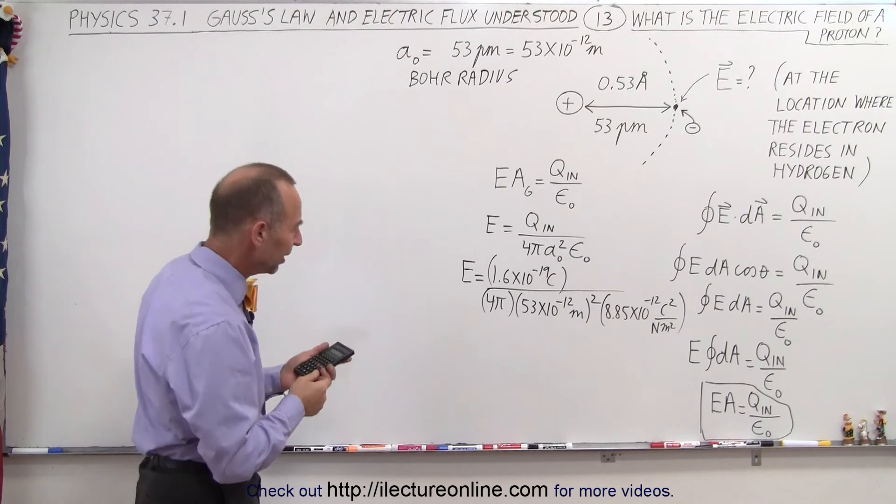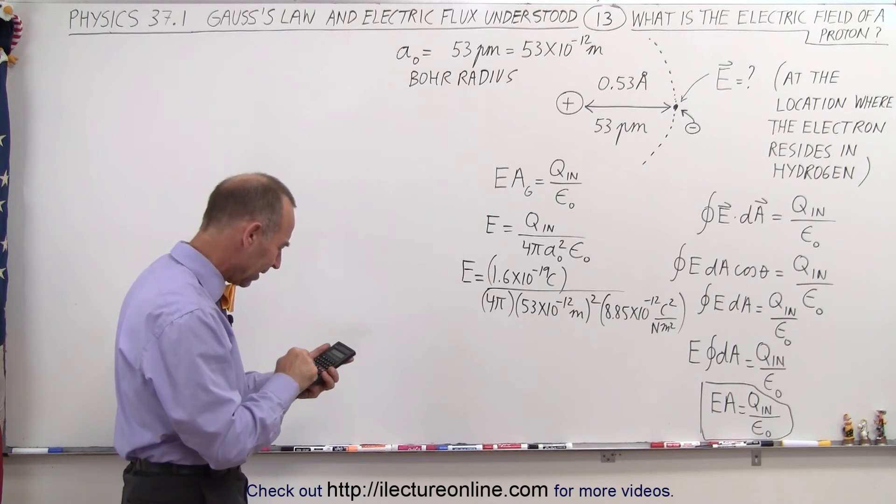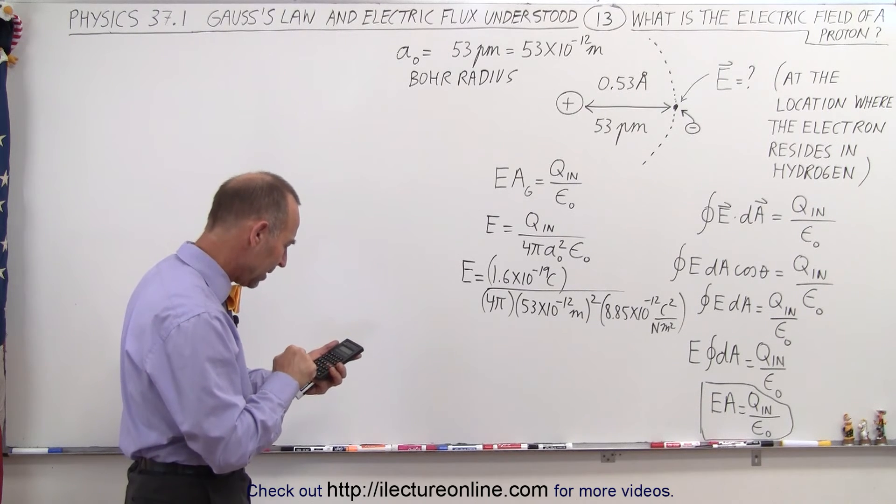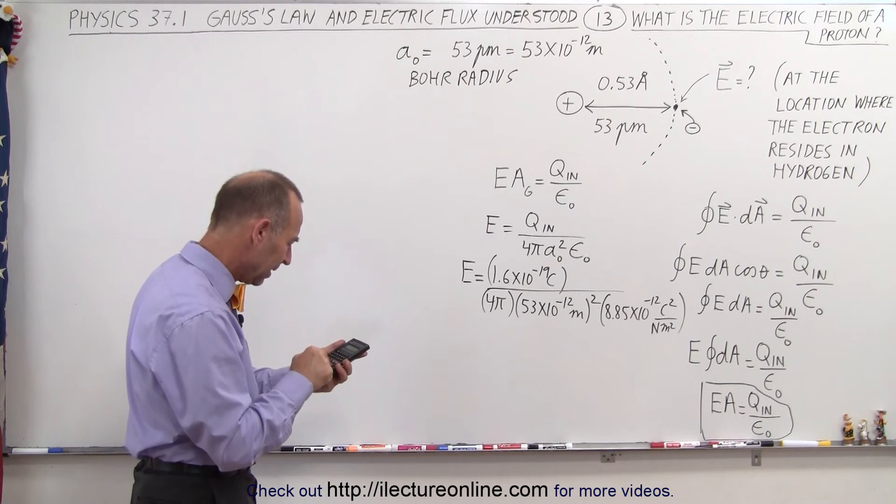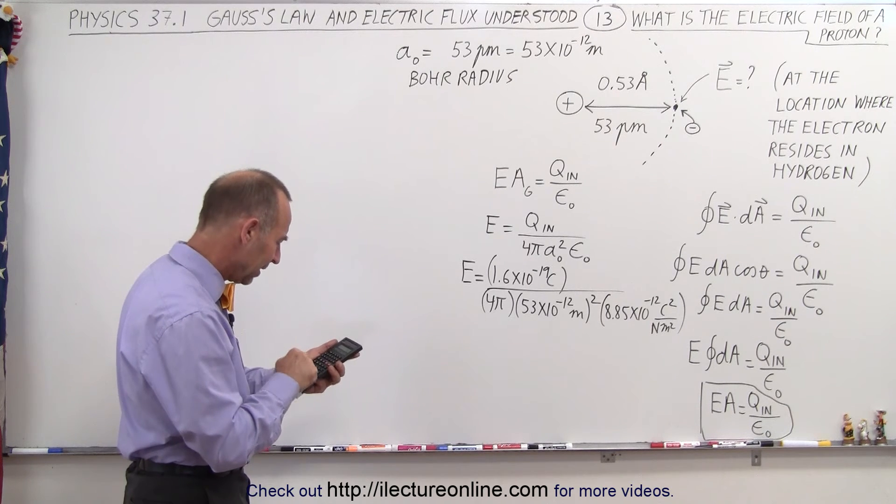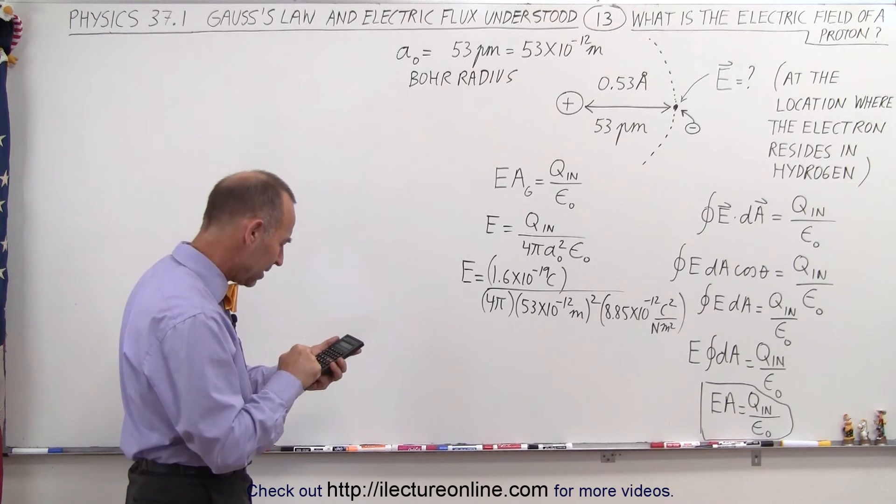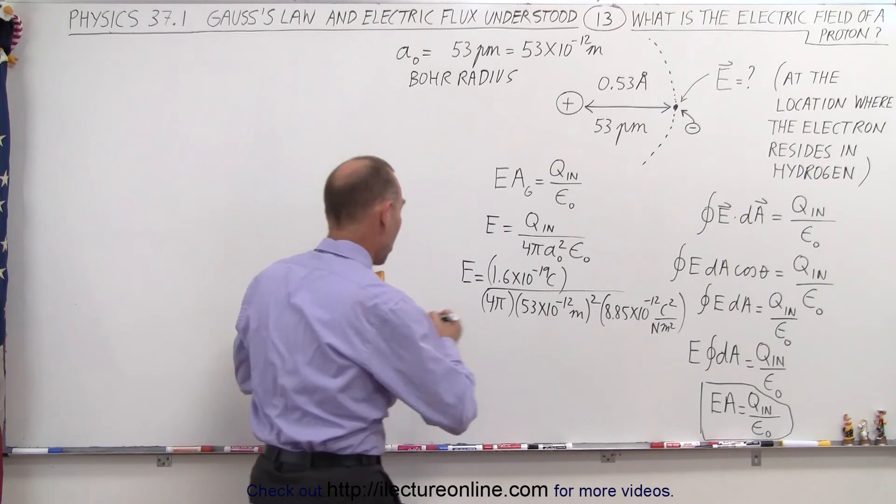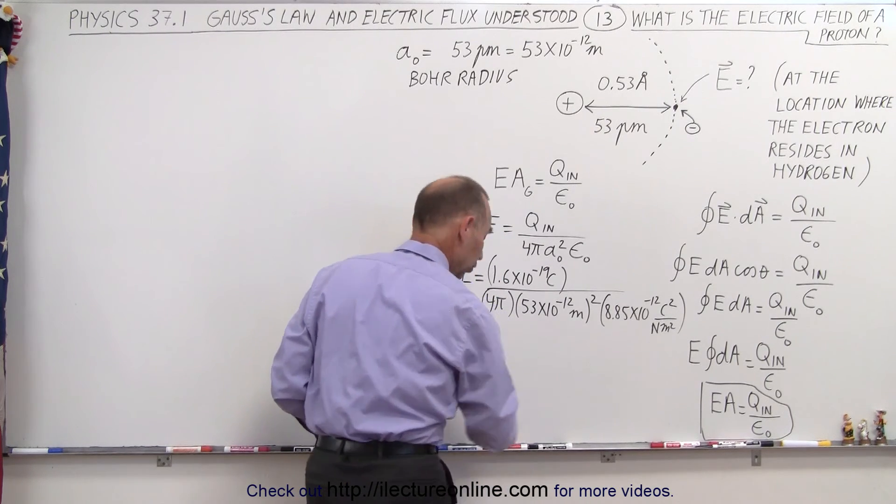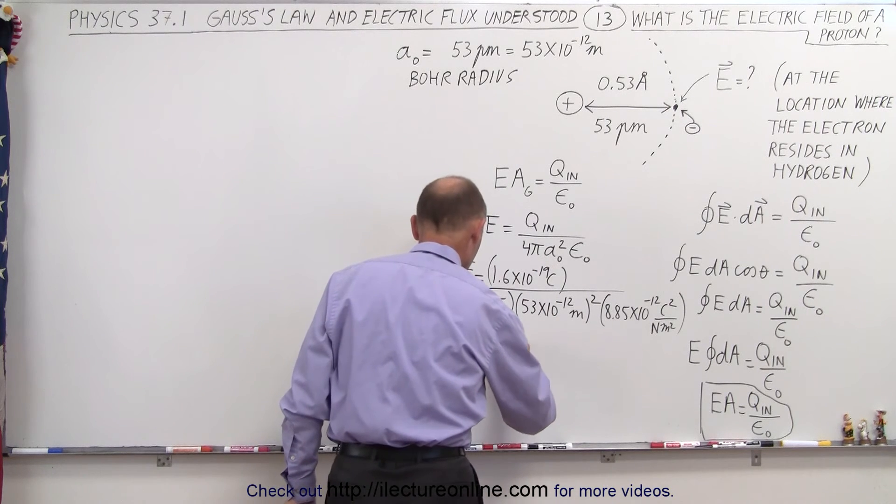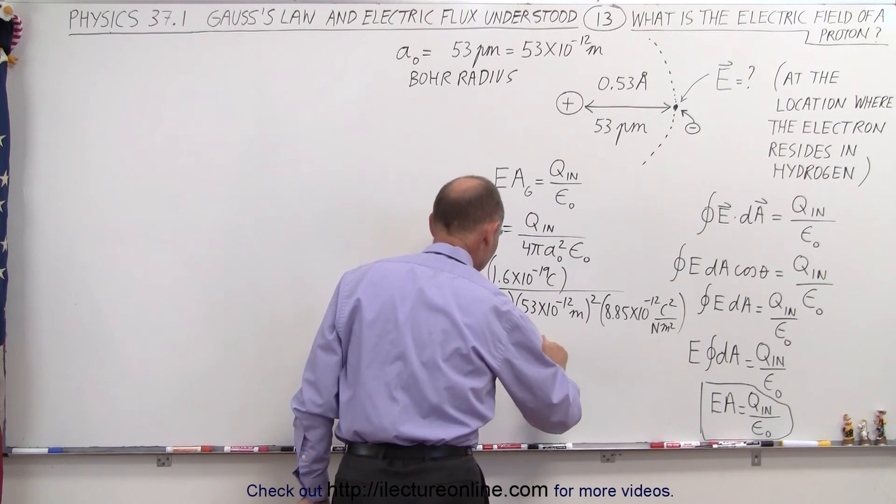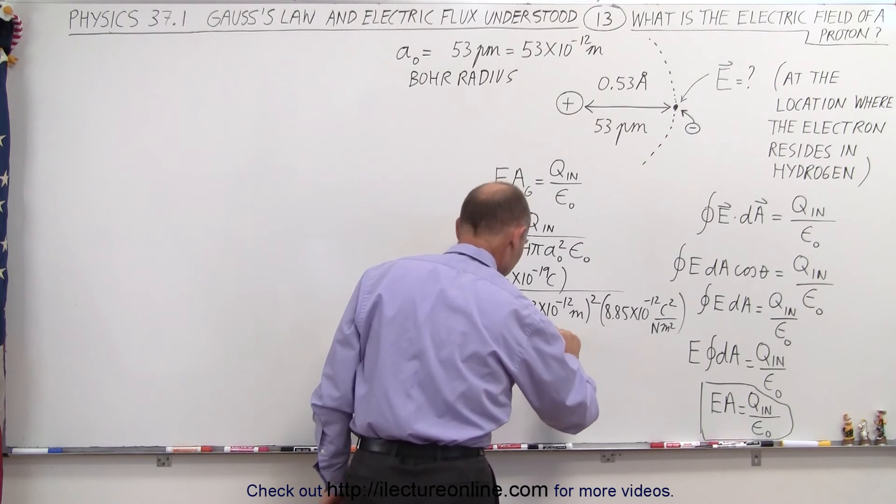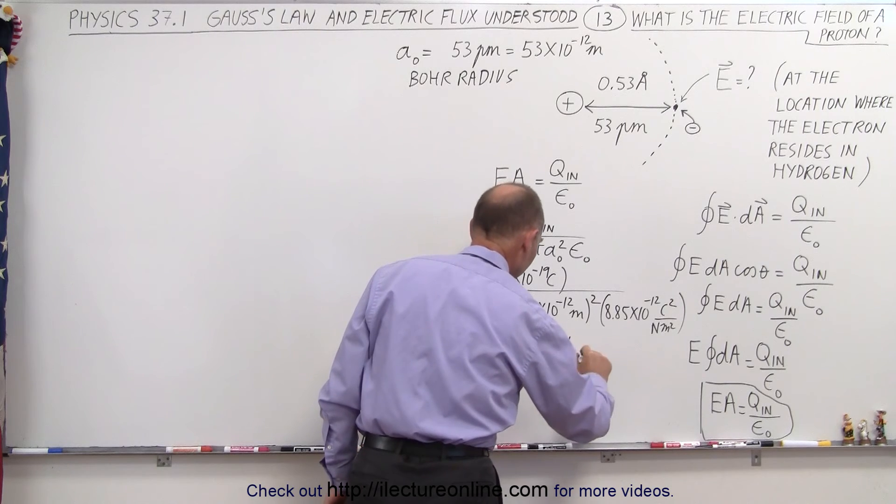Good thing we don't have to use slide rules anymore. 1.6 e to the minus 19, divided by 4, divided by pi, divided by 53 e to the minus 12 squared, and divided by 8.85 e to the minus 12. And we have quite a strong electric field. Electric field is equal to 5.1 times 10 to the minus 11. Oh, no, not minus 11. That would make it a very weak field. It's to the 11 newtons per coulomb.